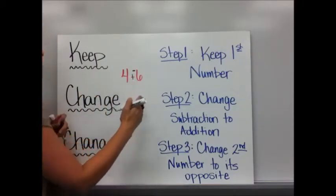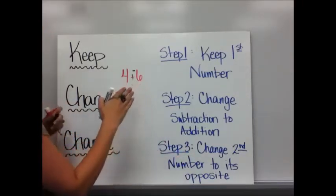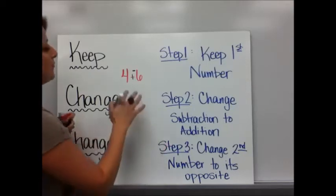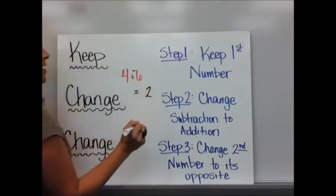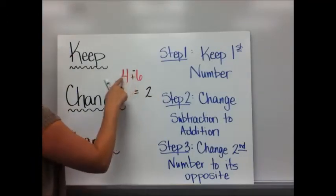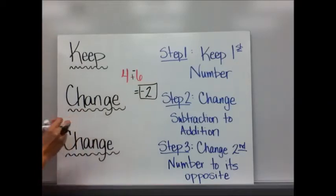4 plus negative 6. And you already know how to add integers. Since they have different signs, I have a positive and negative, I'm going to take the difference. The difference between 4 and 6 is 2. And then which sign has more? There's more negatives than there are positives. So the answer is negative 2.